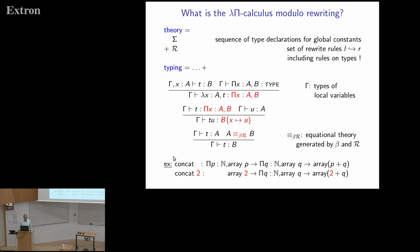Here is a simple example with dependent types. Imagine a concat function that concatenates two arrays of sizes P and Q, giving an array of size P+Q. If you apply concat to the number 2, you replace P by 2 everywhere in the following type. This is where you need computation: if you later replace Q by 3, you want 2+3 to be equivalent to 5 and identify these types.